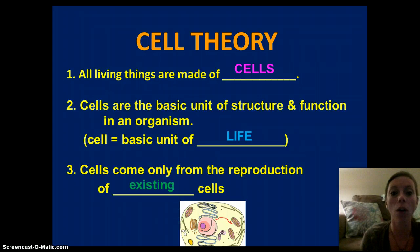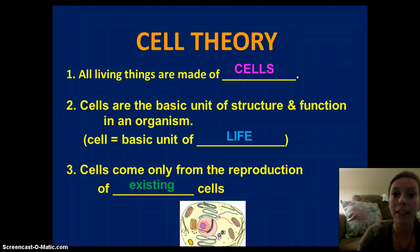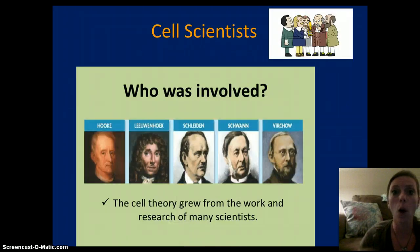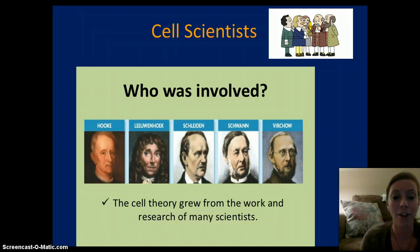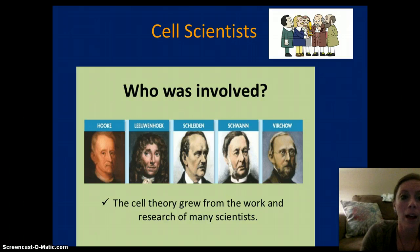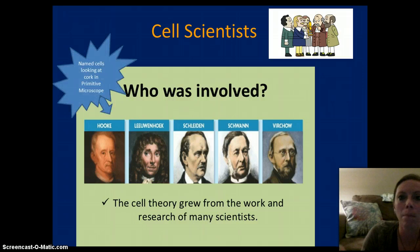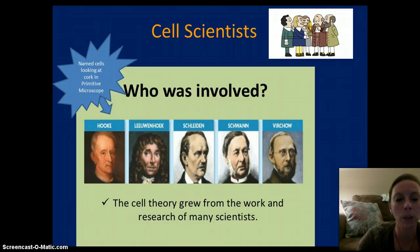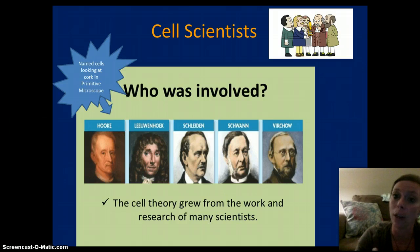The third thing is all cells come from the reproduction of existing cells. Now, the cell theory has been developed over many years by many scientists. First, we have Hooke — Robert Hooke was the first to really look at cells under a microscope. He had a primitive microscope and he was looking at cork, and he determined that they looked like little cells that a monk would live in. So, he called them cells.